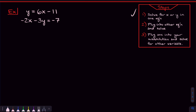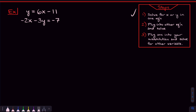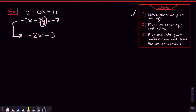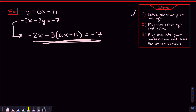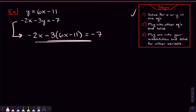We move on to step two, which says to plug that into the other equation and solve. If we know that y is equal to 6x minus 11, that means those two things are exactly the same. So if I take the other equation and start writing it out — negative 2x minus 3 times y — y is the same exact thing as 6x minus 11. So I plug in 6x minus 11 for y. Now the advantage is that we don't have any more y's; all the y's are eliminated and we just have x's left.